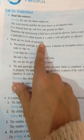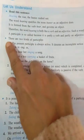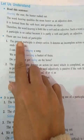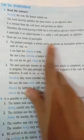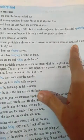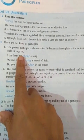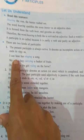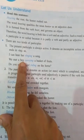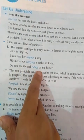There are two kinds of participles: the present participle and the past participle. The present participle is always active. It denotes an incomplete action or state, and it always ends in -ing. Just like: I can hear her singing a song. We met a boy carrying a basket of fruits. Do you see the girl riding on the horse?